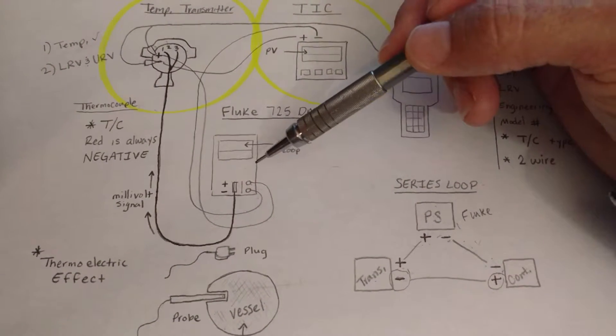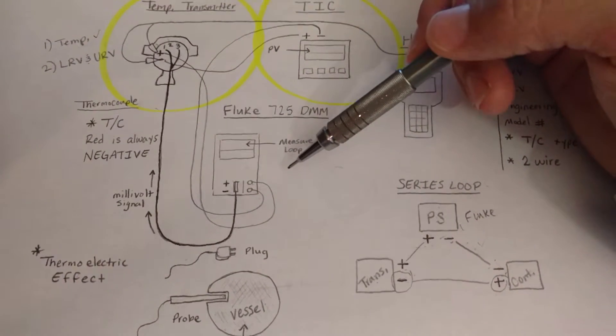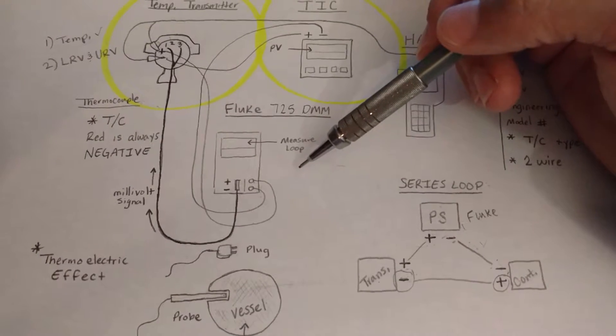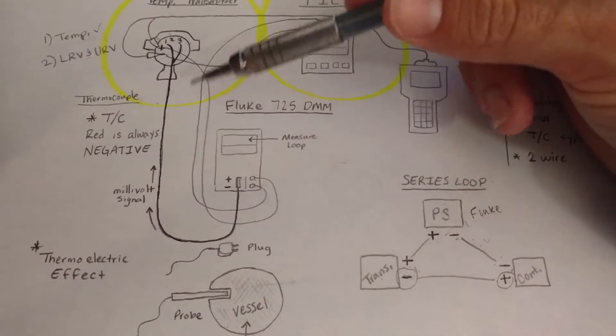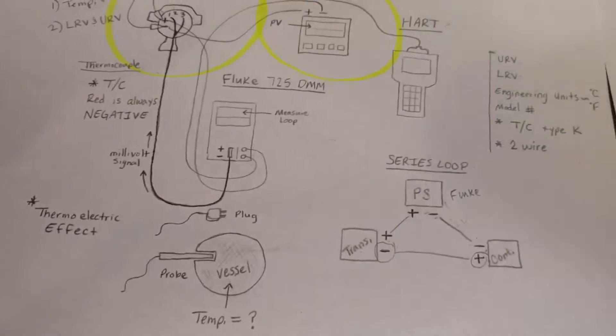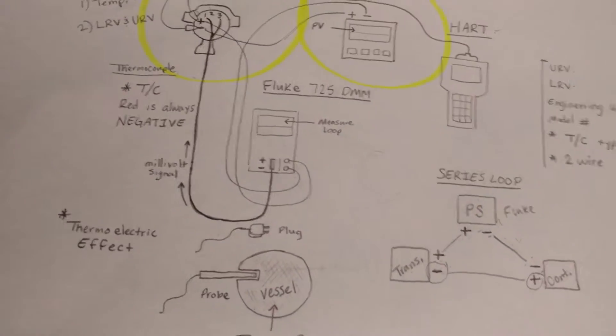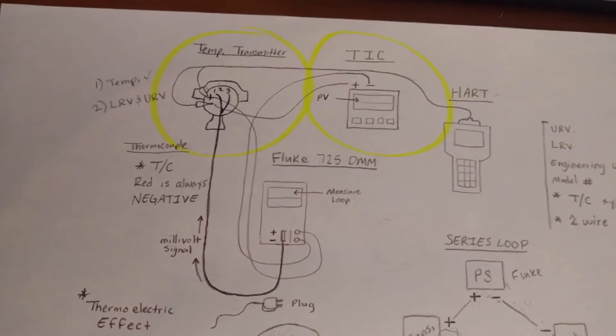So we can basically say, okay, send 72 degrees Fahrenheit worth of millivolts to the transmitter and it will do that. And it's important to know that that's what's going on so that we can test this correctly.